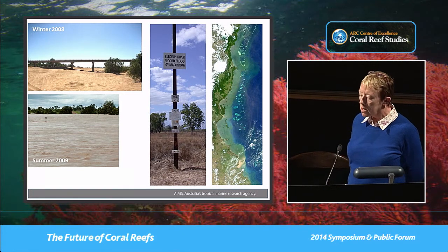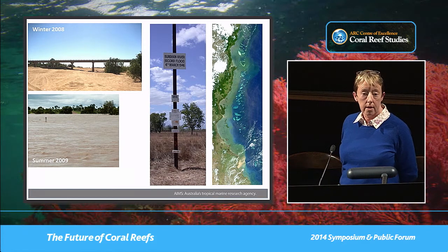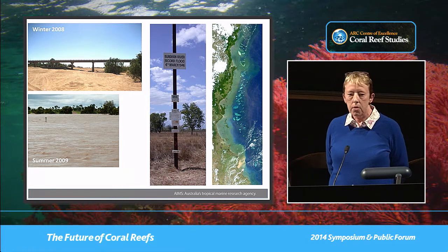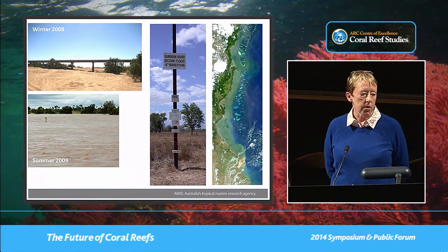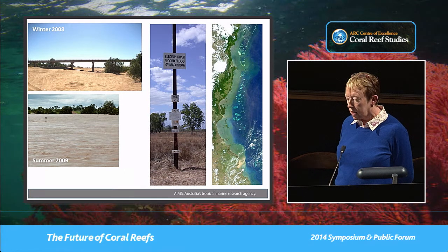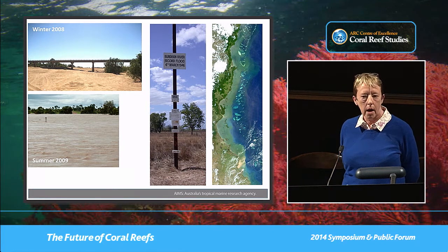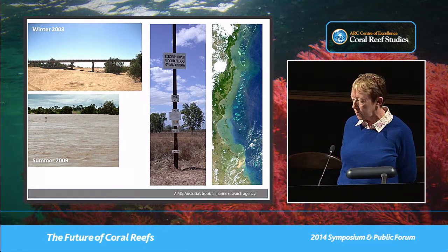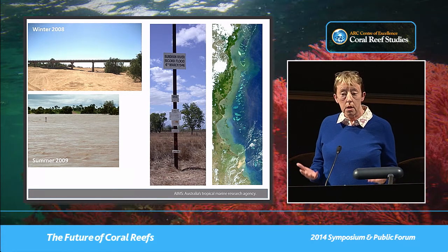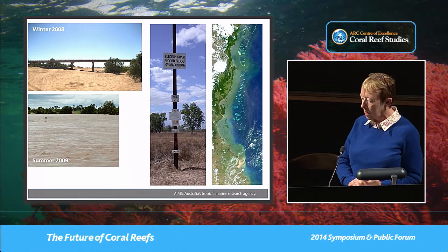The picture below that, the following summer, that bridge has totally disappeared under the water. In the middle, you can be out in a paddock somewhere and can't even see the Burdekin River, but you come across a sign commemorating the 1946 flood. On the right-hand side, we can see how we can look at what happens to these flood plumes as they go out onto the reef and extend across it.